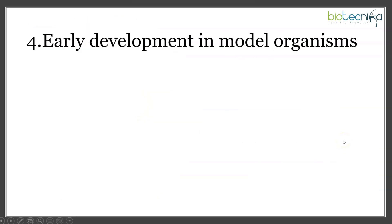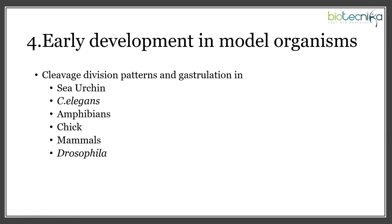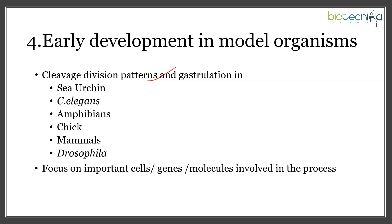The fourth important topic is early development in model organisms, covering cleavage division patterns and gastrulation in sea urchin, C. elegans, amphibians, chicks, mammals, and Drosophila. Focus on important cells, genes, and molecules involved — for example, in Drosophila you must know all types of maternal and zygotic genes and their detailed functions. For gastrulation in sea urchin, know the role of micromeres; in C. elegans, know the cells like AB cell and P1 cell as the zygote divides.